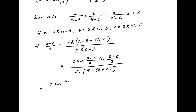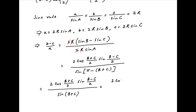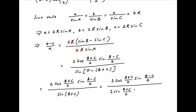This gives 2 cos((B + C)/2) · sin((B - C)/2) in the numerator. In the denominator, since sin(π - x) = sin(x), the denominator becomes sin(B + C), which expands as 2 sin((B + C)/2) · cos((B + C)/2).